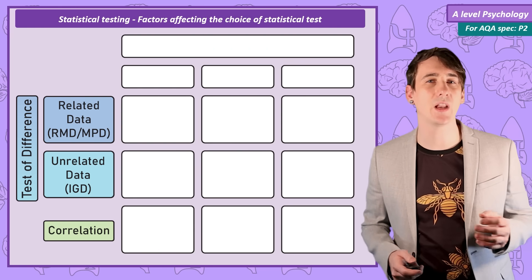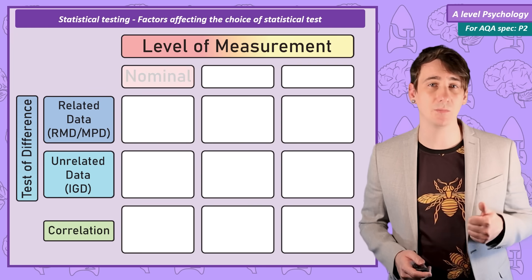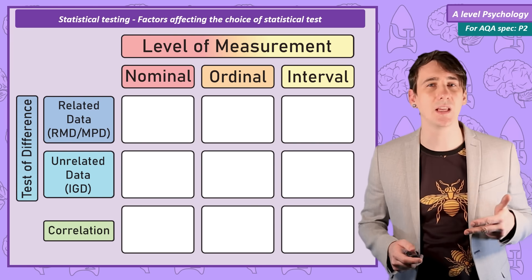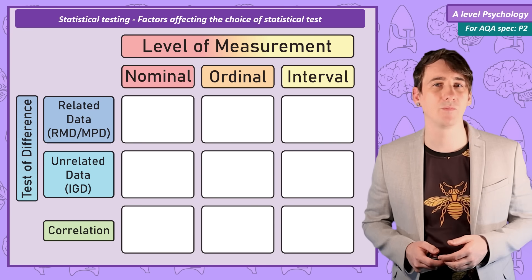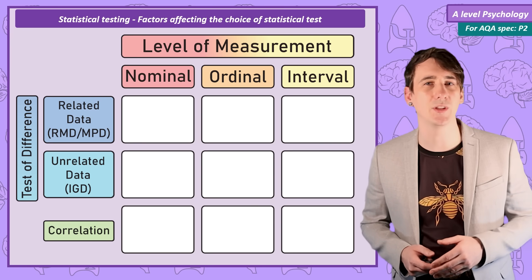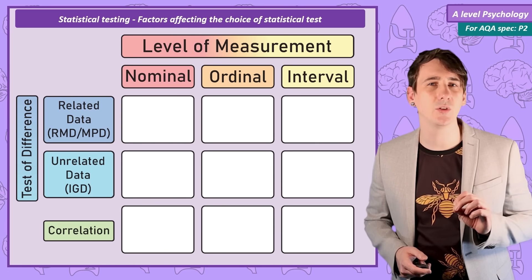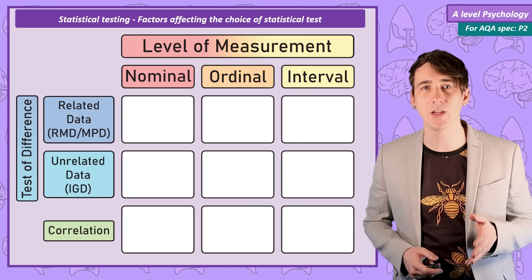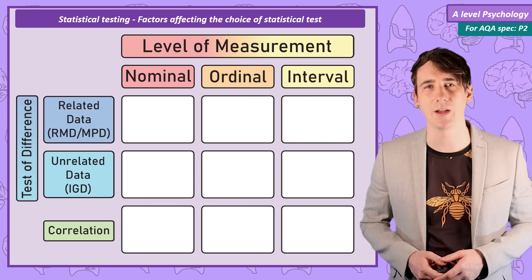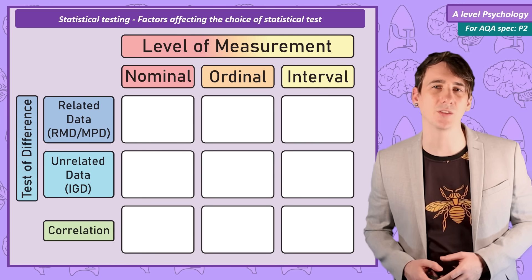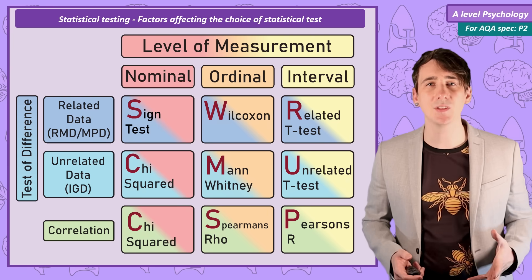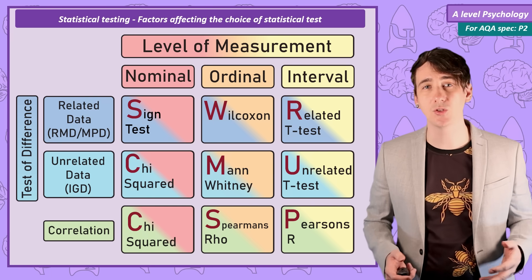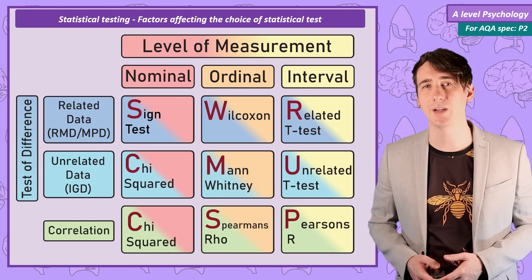Along the top of the table we have the levels of measurement: nominal data — data in categories; ordinal data — data we can put in order; and interval data — where there is the same difference between each data point. We also treat ratio data as interval data in this table. The statistical test we use depends on the dependent variable's level of measurement, or in a correlation, the co-variable with the lowest level of measurement. Each statistical test is only appropriate for a particular combination of data, and it is your job to work out which one to use in an exam.